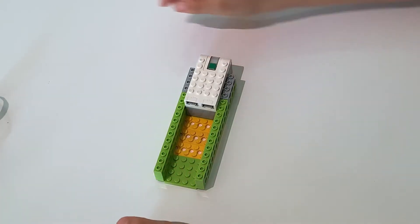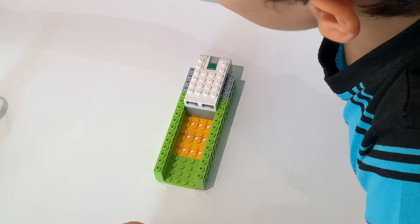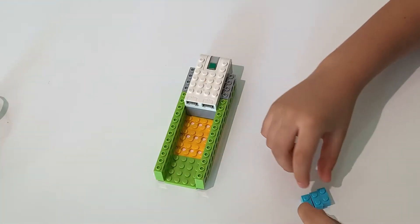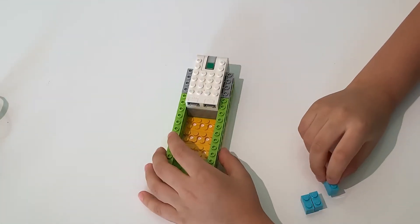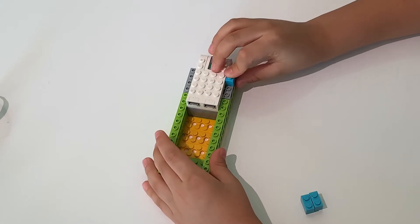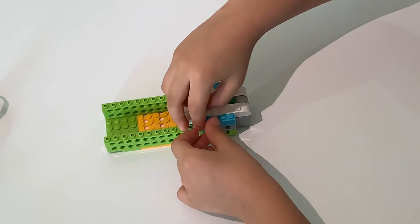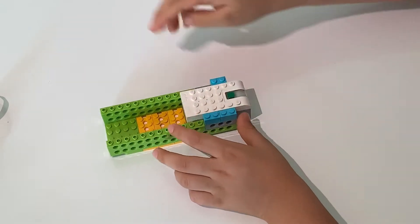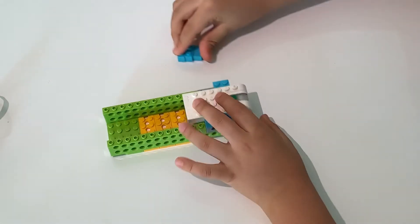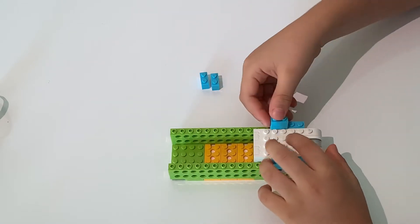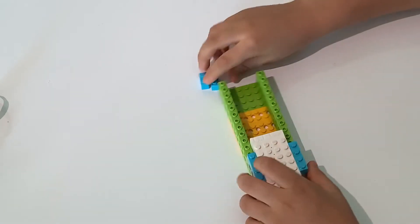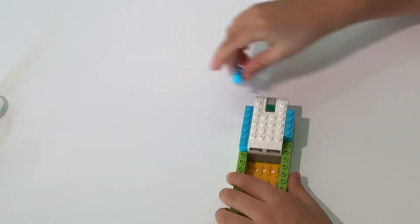And then, we'll grab three of these two dot long pieces, place one here, another one here, and another one here. And then, the other three of the blue pieces, two dots long here, here, here.